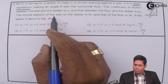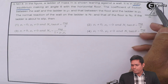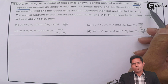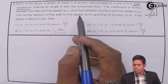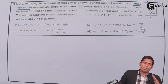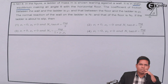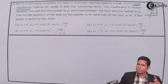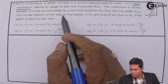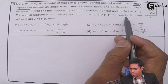The normal reaction of the wall on the ladder is N1 — here there will be a normal reaction in this direction. There will also be a normal reaction pointing upward from the floor, which is N2. So there are two normal reactions at the two points of contact: one where the ladder touches the wall and one where it touches the floor.